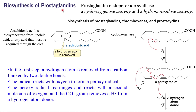Now we will study the biosynthesis of prostaglandins. The main enzyme involved is prostaglandin endoperoxide synthase, which performs two kinds of activities: cyclooxygenase activity, whose main role is formation of the cyclic ring, and hydroperoxidase activity. The biosynthesis of prostaglandin, thromboxane, and prostacycline starts from arachidonic acid, whose biosynthesis starts from linoleic acid — a fatty acid required in the diet because our body cannot synthesize linoleic acid. Arachidonic acid is an omega-6 fatty acid.